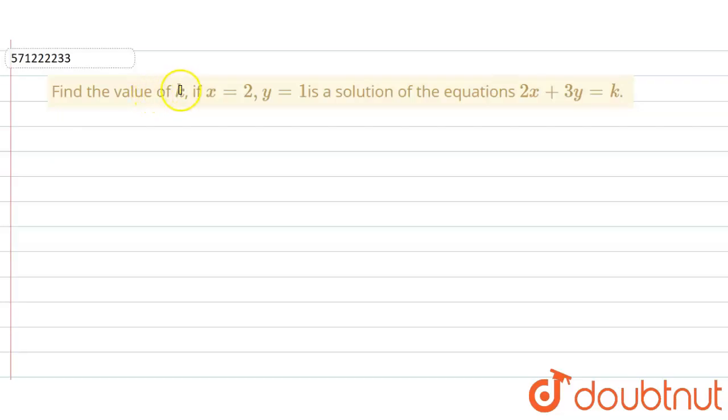In the given question, we have to find the value of k if x equals 2 and y equals 1 is a solution of the equation 2x plus 3y equals k.